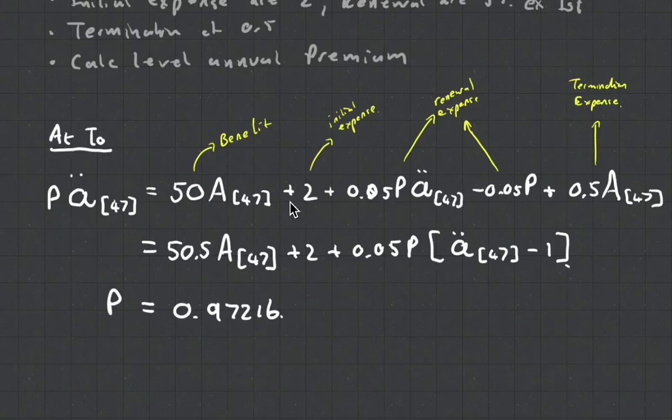A lot of people in the test forget to remove the first expense. As you can see, initial expense is up front and the termination expense, you can almost even link it up with the benefit. So that's quite easy.